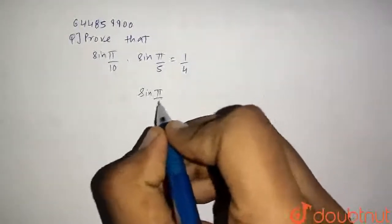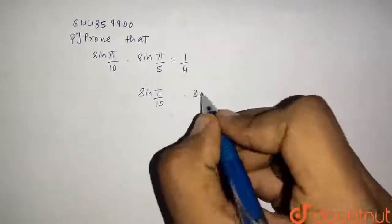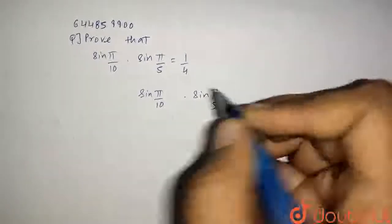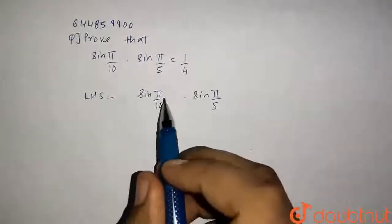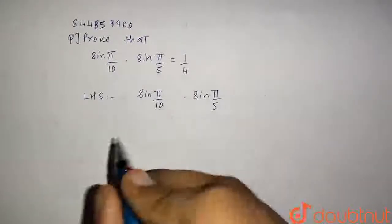So sin(π/10) × sin(π/5), which is the LHS. I am just writing the LHS. Now π/10 is basically 180/10.